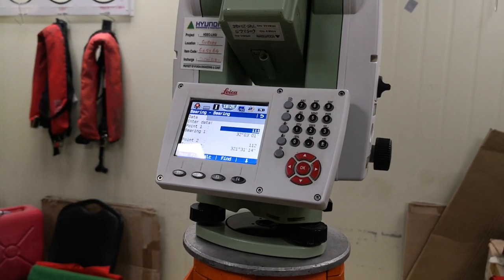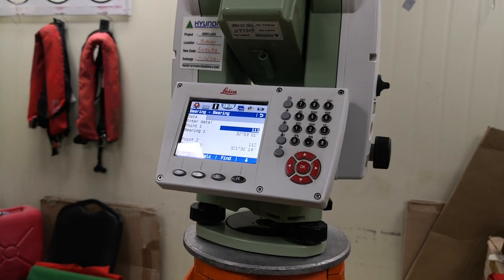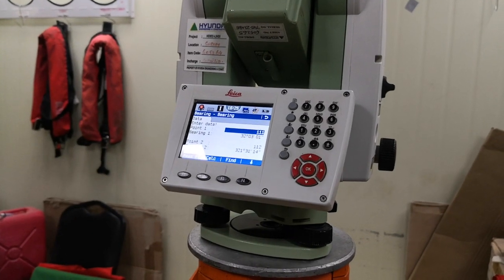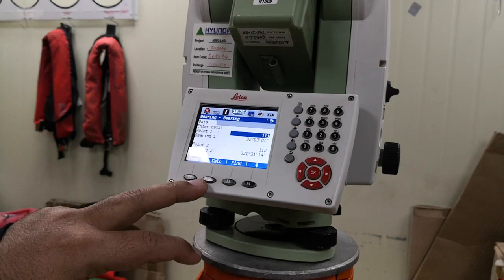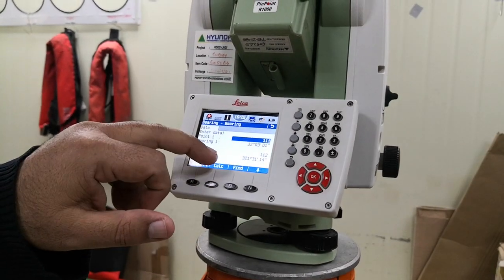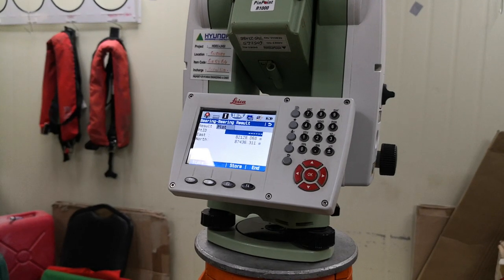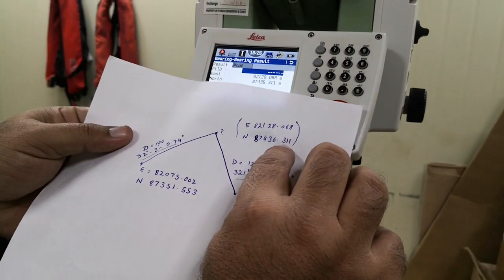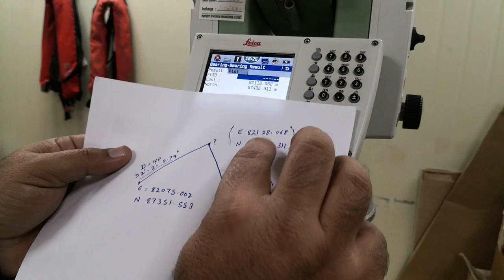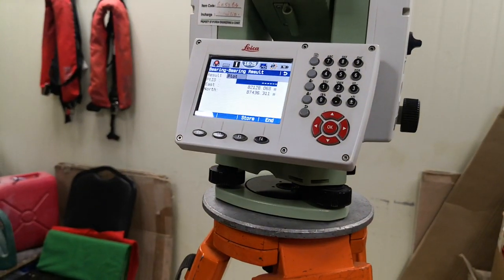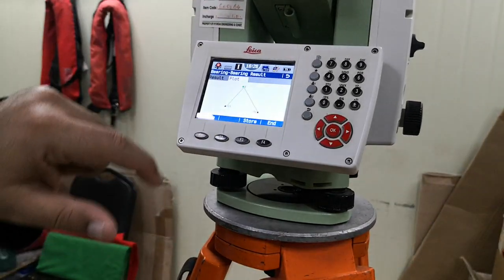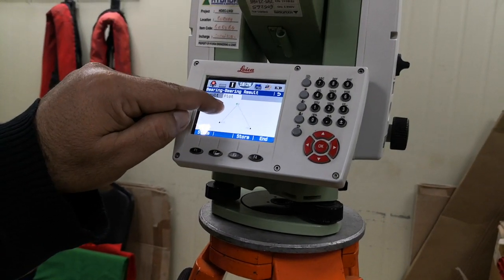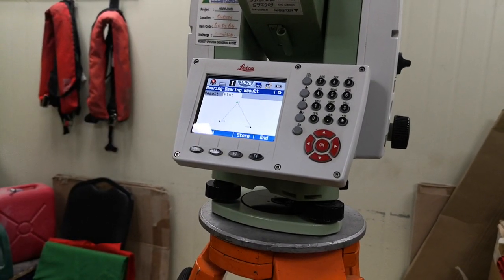Now I need to press F2 to calculate the intersection point — the unknown point I require. So I press F2, or if you have a touch screen, simply touch the F2 area to calculate directly. Once calculated, the instrument gives me the coordinates of that location. As you can see, I already calculated these coordinates in AutoCAD and the result is matching. You can do this experiment with different points. On page 2 you can see the point numbers and the location of the intersection point.